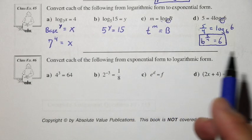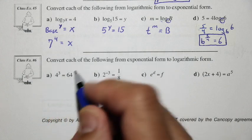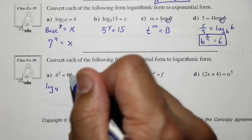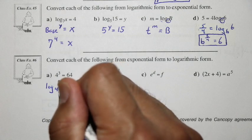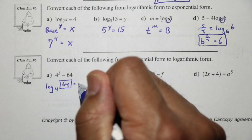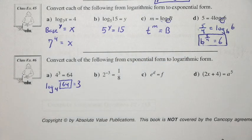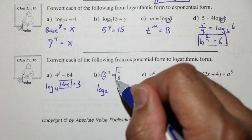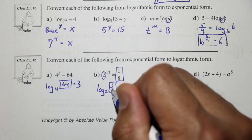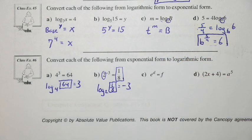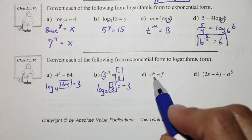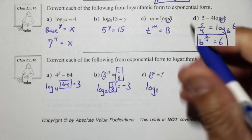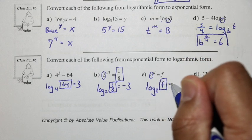Let's take a look at class example 6 and convert each of the following from exponential form to log form. We have 4 to the exponent 3 is equal to 64. We take the base 4, take the result and place it in as our argument, and take the exponent and make it our result. Here we recognize base 2, so we have log base 2 of 1 over 8 is equal to negative 3. For e to the exponent d is equal to f, in log form we have log base e of f is equal to d.